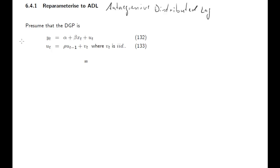We start out as follows. Let's assume you think the model is something like this. We have a dependent variable and explanatory variable X, and an error term, and you think that error term is AR(1) correlated — autocorrelated with order 1. So that may come from an AR(1) process, for instance. The question is now what to do here.